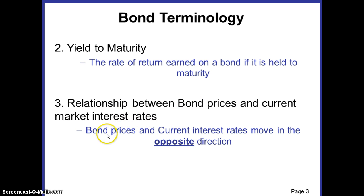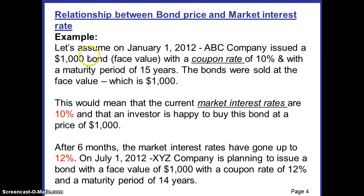Bond prices and current interest rates always move in the opposite direction. If there is an increase in the bond price, there is a decrease in the current interest rate, and vice versa. Let's understand this with an example. On January 1, 2012, ABC Company issued a $1,000 bond — meaning the face value of the bond is $1,000.